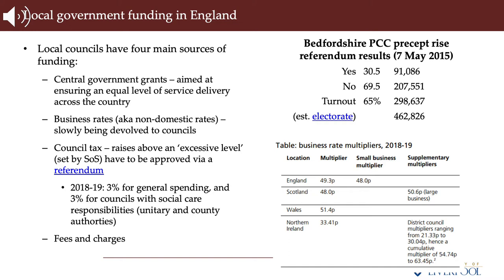Once local authorities know the level of revenue support grant funding they will receive as set out in the local government finance settlement, they are able to finalise their budgets. Local authorities then decide how much they expect to spend in the coming year, what other income they expect to raise, and how they can use their financial reserves to fund spending or keep down council tax.